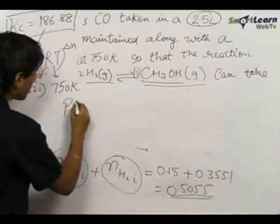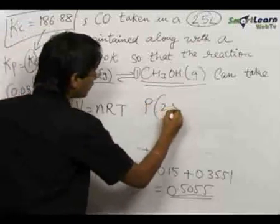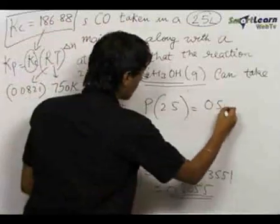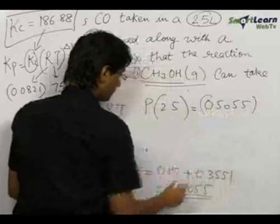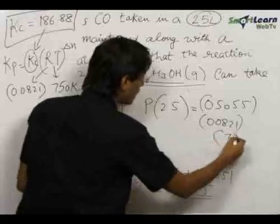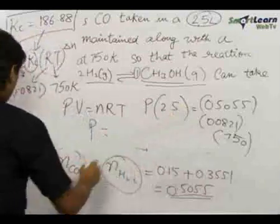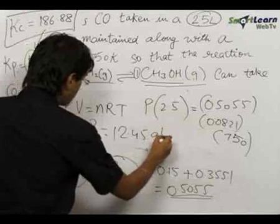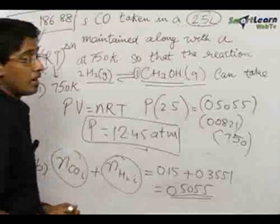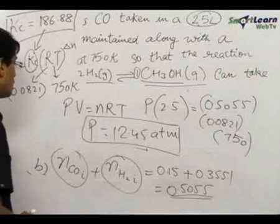We want the total pressure at equilibrium with no catalyst, using the ideal gas equation PV = nRT. Substituting: P × 2.5 = 0.5051 × 0.0821 × 750. Solving, we get the final pressure as approximately 12.45 atmospheres.